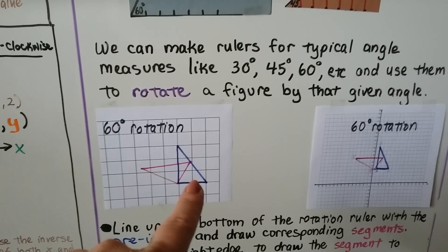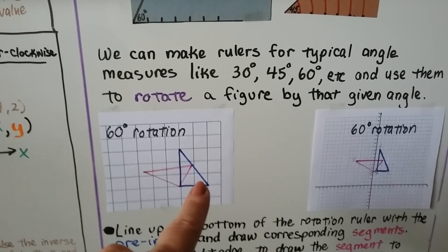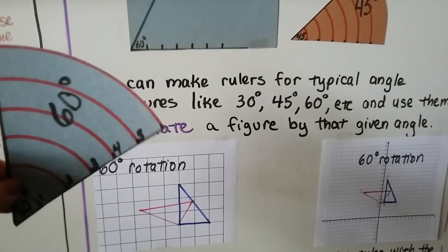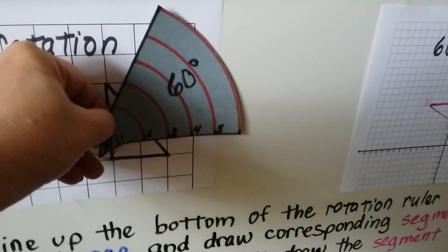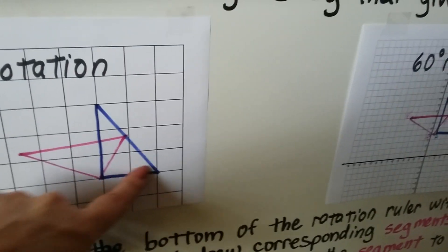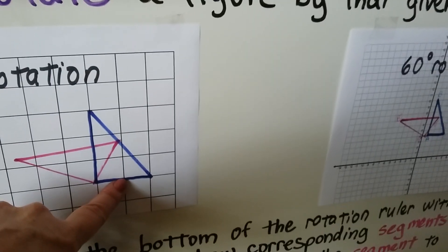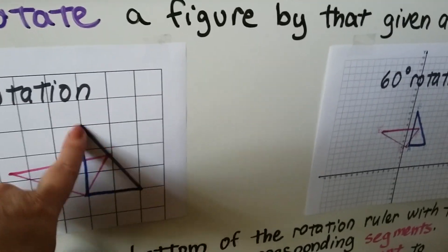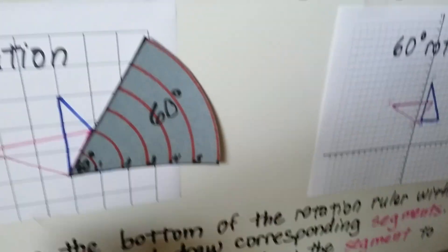So if we want to rotate this blue triangle 60 degrees counterclockwise, what we do is we take our rotation ruler and we line it up along this bottom right here, because we're going to rotate this line 60 degrees and then we're going to rotate this segment 60 degrees. So segments.